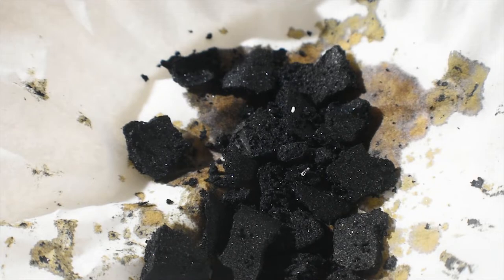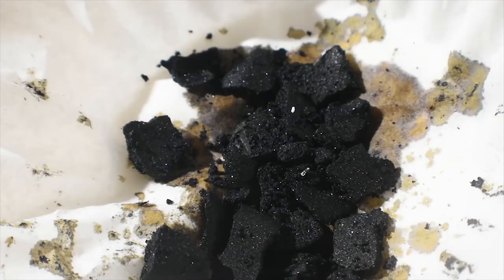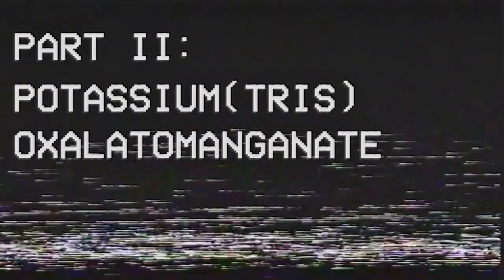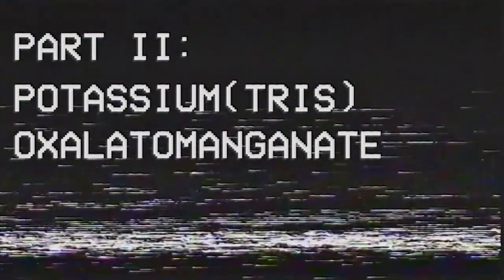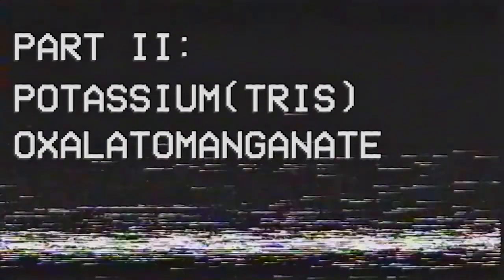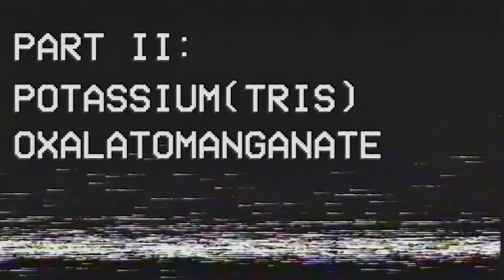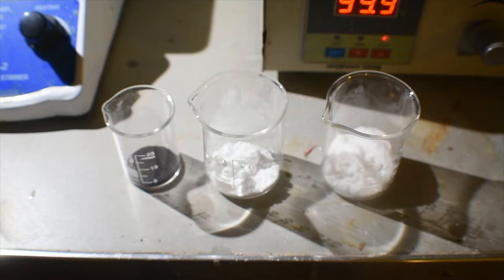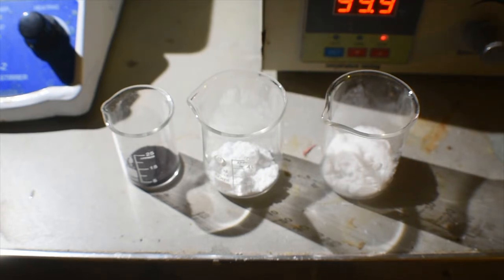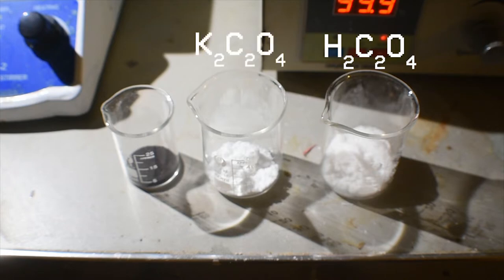Now on to part two, which is potassium tris-oxalato-manganate. So to make potassium tris-oxalato-manganate, we will need 12.6 grams of oxalic acid dihydrate, 5.1 grams of potassium oxalate, and 3.8 grams of potassium permanganate.